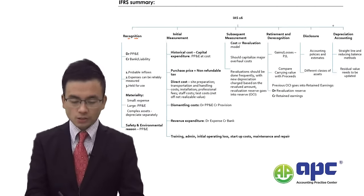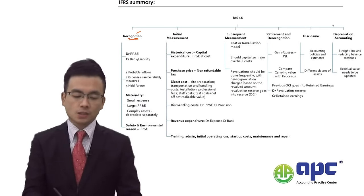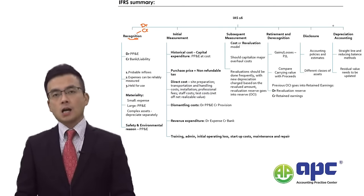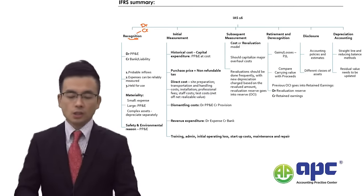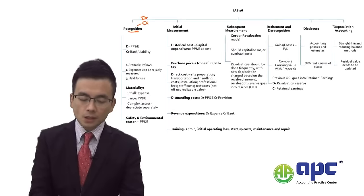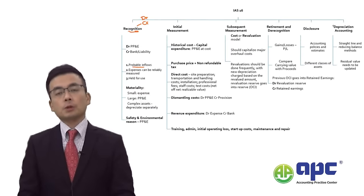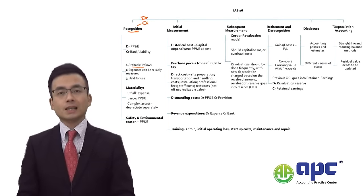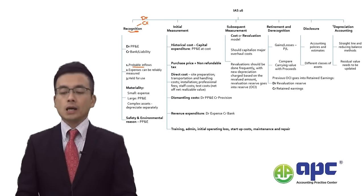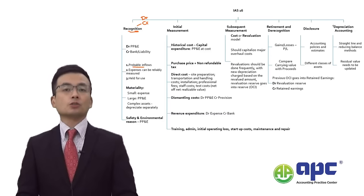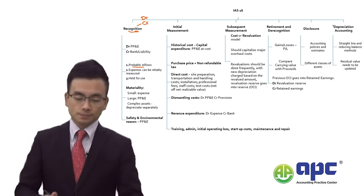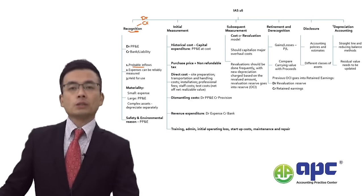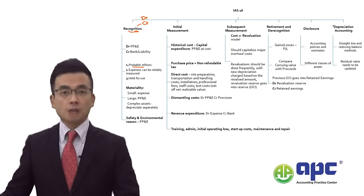For the recognition criteria under IAS No. 16, we recognize the PP&E onto the Statement of Financial Position when it is probable that future economic inflows will come into the business — for example, using PP&E to generate future economic benefit by producing and selling a product. Alternatively, another inflow would be the reduction in costs from using the PP&E.